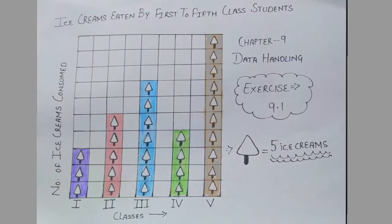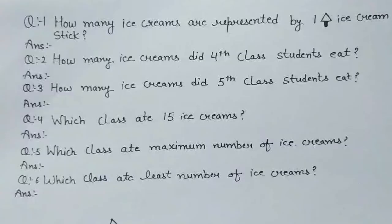So dear students, this is your homework. Look at this carefully — this is a pictograph that shows ice creams eaten by 1st to 5th class students of a particular school. In this pictograph, each ice cream stick equals to 5 ice creams. Answer the following questions: How many ice creams are represented by 1 ice cream stick? How many ice creams did 4th class students eat? How many ice creams did 5th class students eat? Which class ate 15 ice creams? Which class ate the maximum number of ice creams? Which class ate the least number of ice creams?